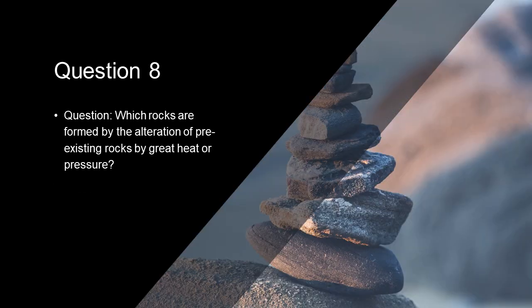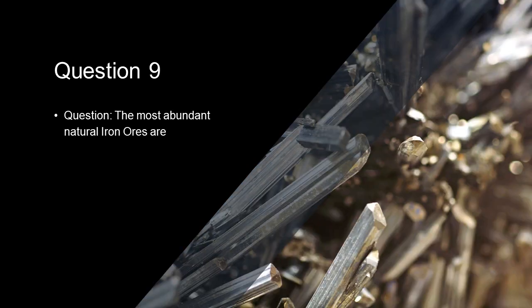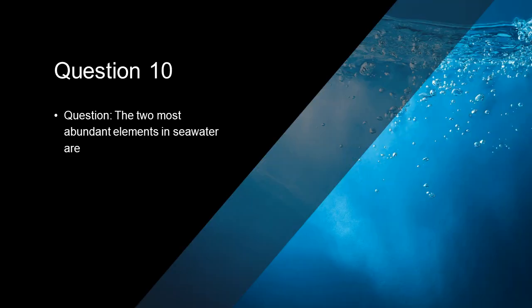Which rocks are found by the alteration of pre-existing rocks by great heat or pressure? Metamorphic rocks. The most abundant natural iron ores are hematite and magnetite. Two most abundant elements in sea water are sodium and chlorine.